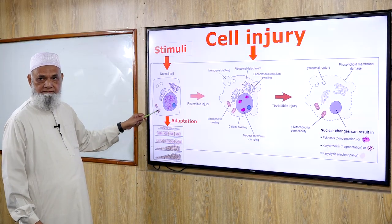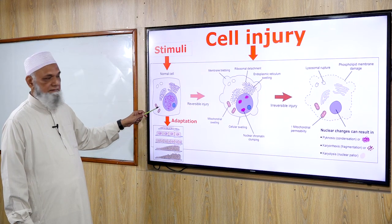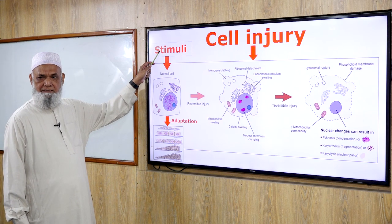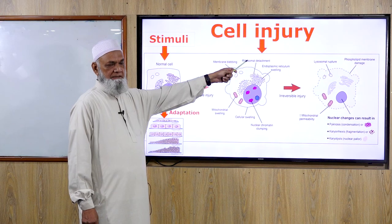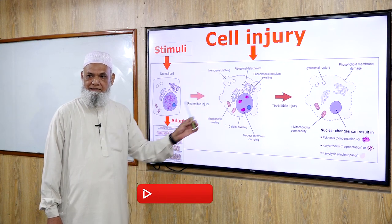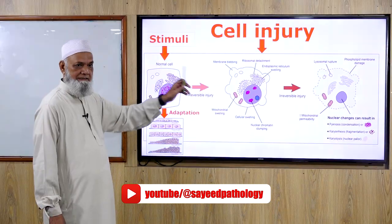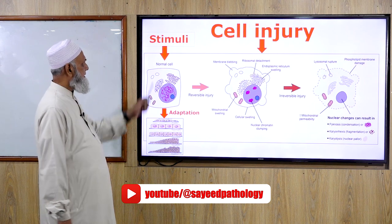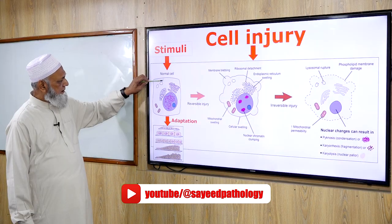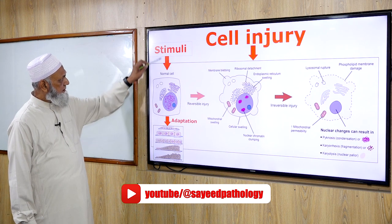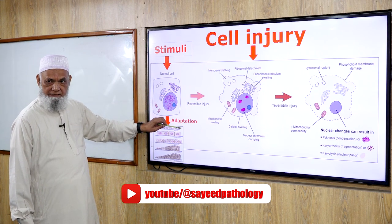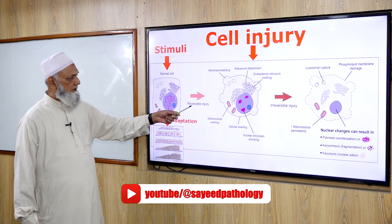This is a normal cell. These are the stimuli acting on it: physical agents, chemical agents, ischemia, hypoxia, infectious agents, genetic causes, immunological causes, and iatrogenic causes. The alterations that occur in the cell due to these stimuli may result in adaptation or cell injury.